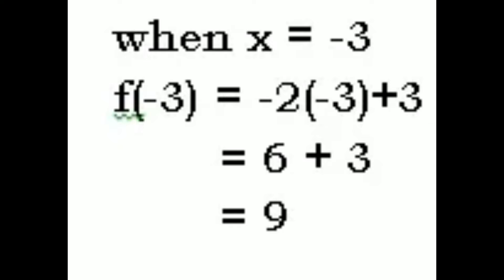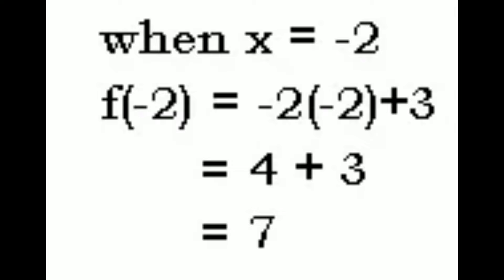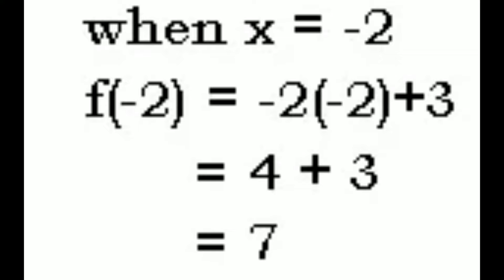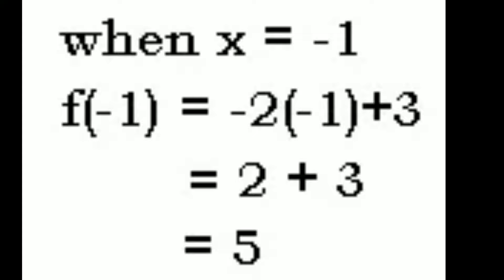When x = -3: f(-3) = -2(-3) + 3 = 6 + 3 = 9. When x = -2: f(-2) = -2(-2) + 3 = 4 + 3 = 7. When x = -1: f(-1) = -2(-1) + 3 = 2 + 3 = 5.